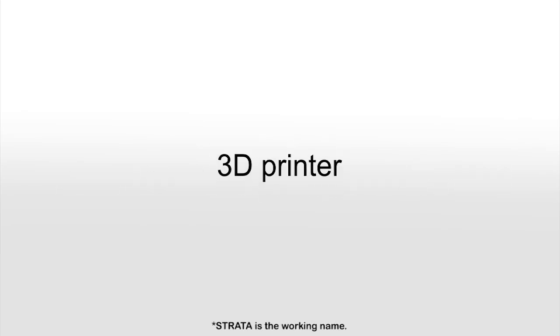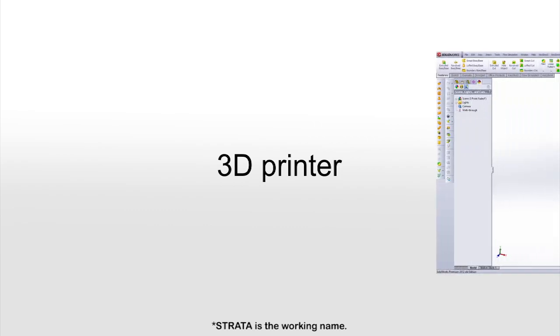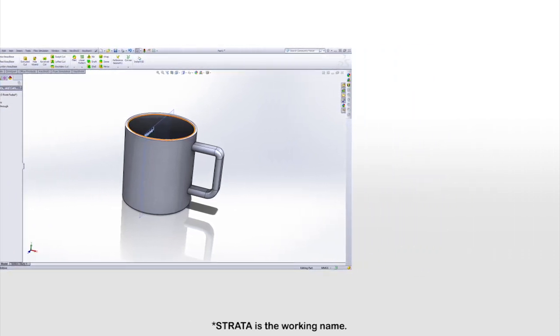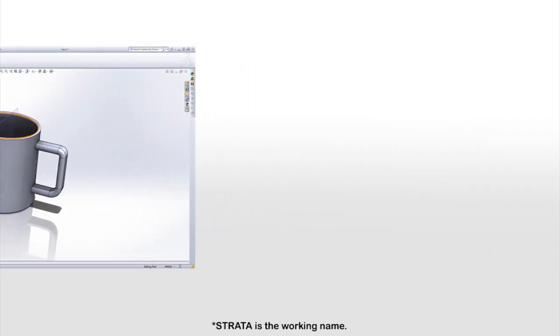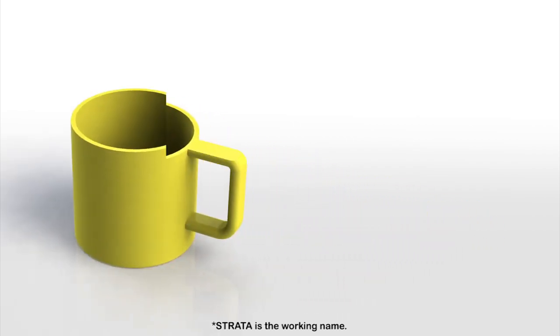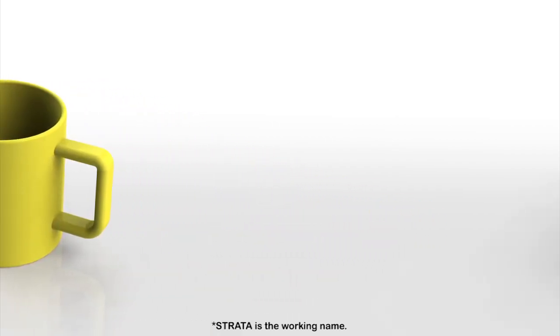3D printing means to make three-dimensional solid objects from CAD models. First, a CAD model of the required shape is generated. The model is sent to the 3D printer. The printer adds material layer by layer to make the required shape.